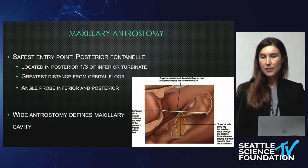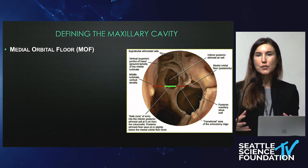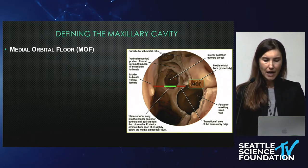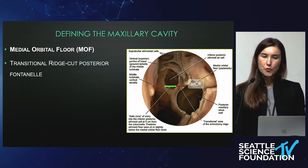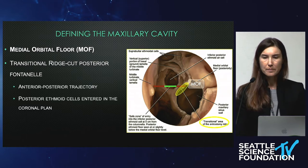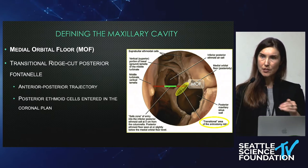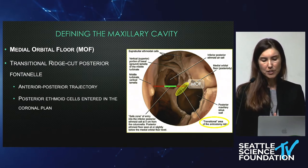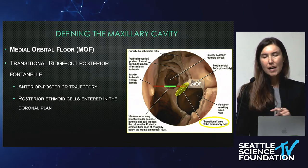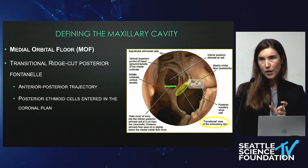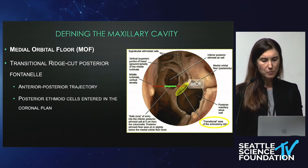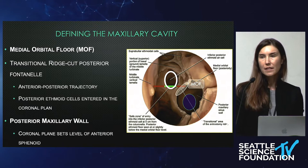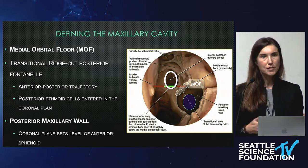A wide antrostomy will define your maxillary cavity, which we use to then navigate to the other sinuses. You want to define your medial orbital floor, and also your transitional ridge — that's the posterior fontanelle — which sets the anterior-posterior trajectory and also defines where your posterior ethmoid cells are. Drawing a line from the transitional ridge over to the septum, the center of that line is where your posterior ethmoid cells are going to be — the inferiormost posterior ethmoid cells. The last thing to define is your posterior maxillary wall, because in the coronal plane, the entrance to the sphenoid should be at the same depth as that posterior maxillary wall.